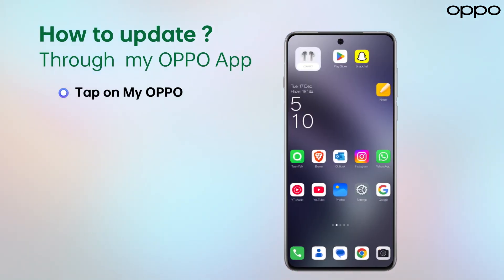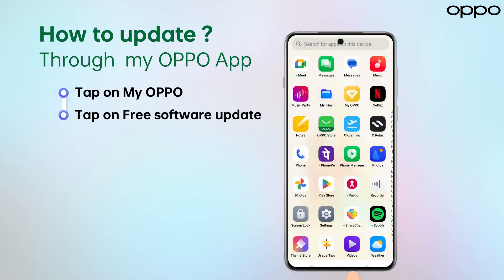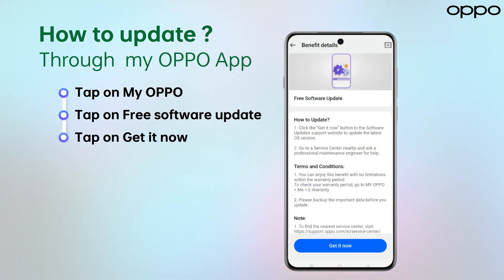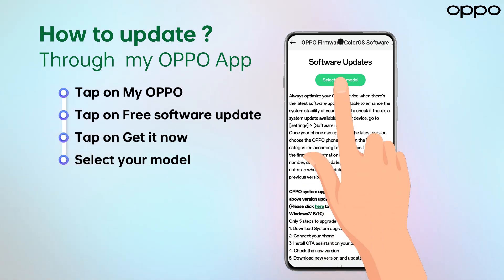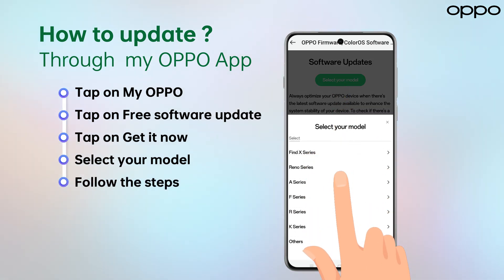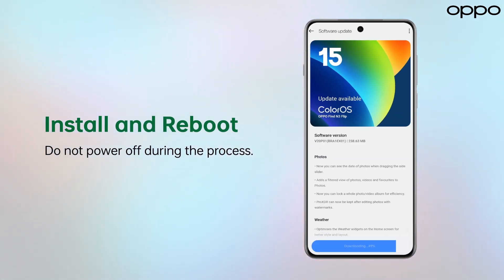Updating is effortless. Tap on MyOPPO, then tap on Free Software Update. Tap Get It Now, select your module, and follow the steps. Tap Install and let your phone reboot to apply the update.